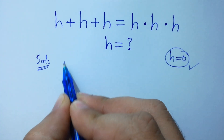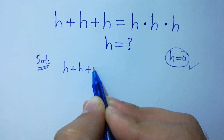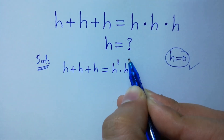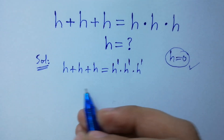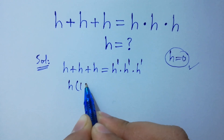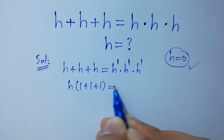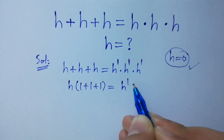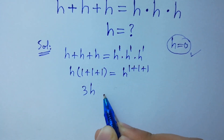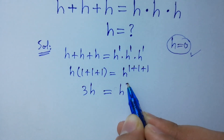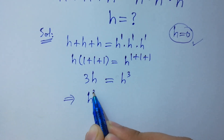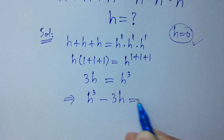We have h plus h plus h equal to h¹ times h¹ times h¹. If we factor h on the left side, we have h(1 plus 1 plus 1), and on the right side h with the same base with power 1 plus 1 plus 1. We get 3h equal to h³.